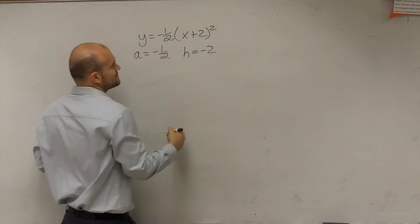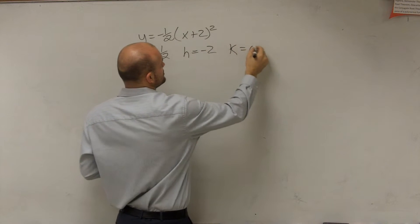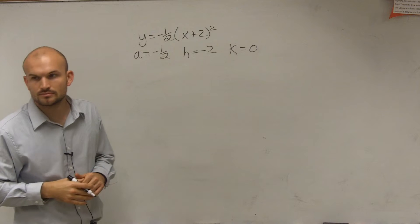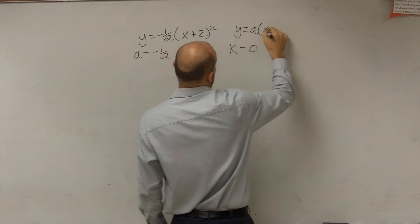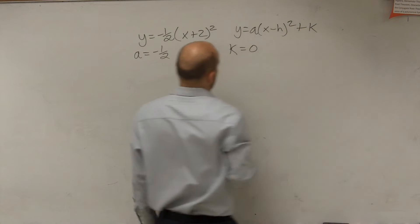h, which equals negative 2, and k, which is going to equal 0, right? Because vertex form is y equals a times x minus h squared plus k.